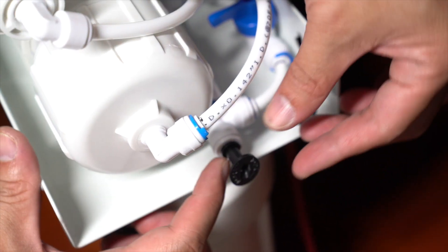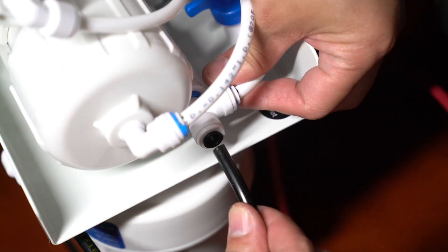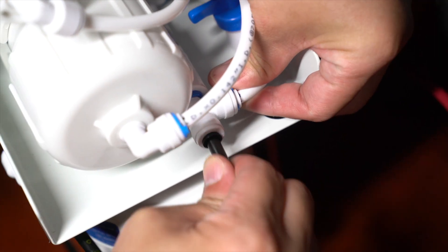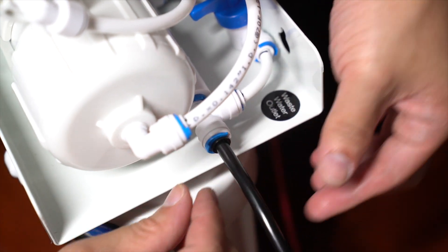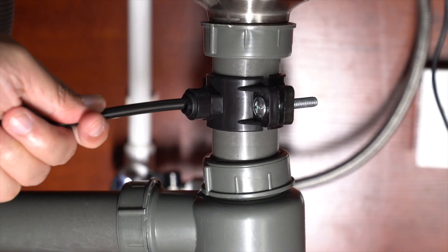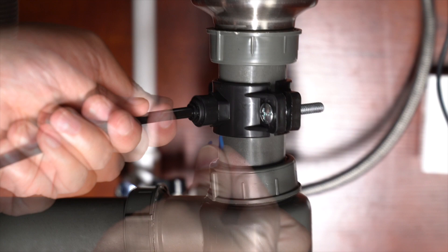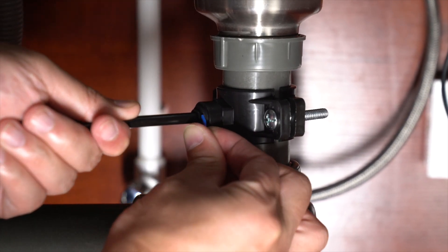In the end, pull out the black plug and insert the black PE tube. Lock it with the blue locking clip. Now, insert the other side of the black tube into the wastewater saddle valve and lock it with the blue locking clip.